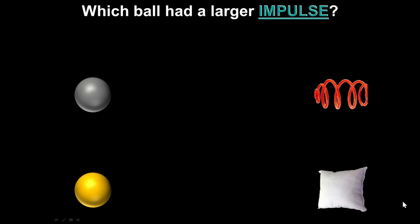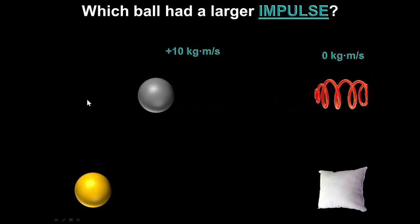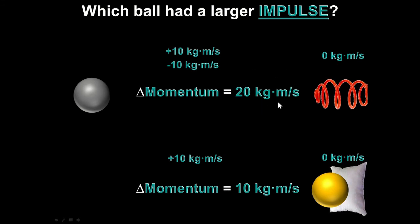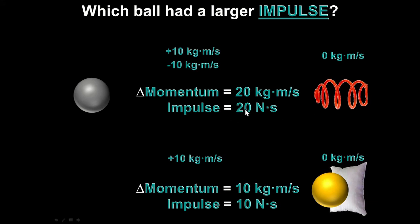A ball hits a spring and bounces back; another ball hits a pillow and stops. Which had the larger impulse? The ball that bounced came in at positive 10 kilogram meters per second and bounced back at negative 10 — a change of 20 kilogram meters per second. The ball that hit the pillow came in at 10 and stopped at zero — a change of only 10. The ball that bounced had twice the change in momentum — the larger impulse.